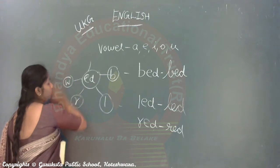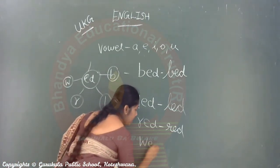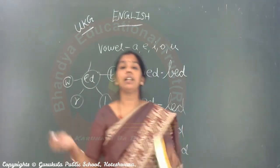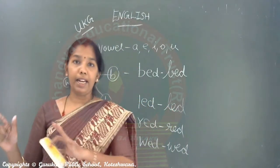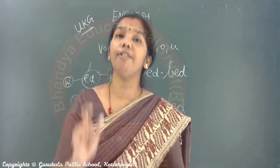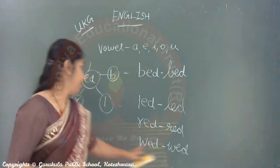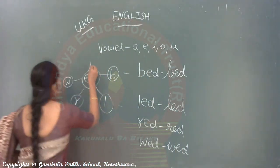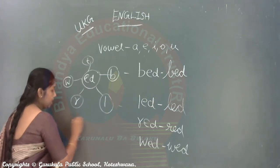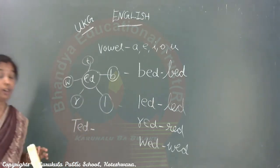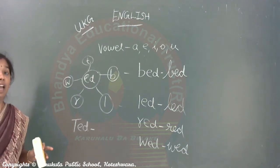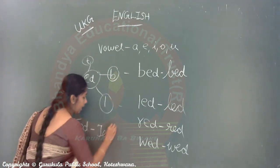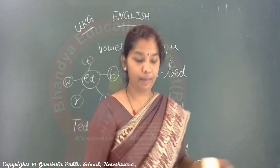If I use W — W-E-D. What will it become? W-E-D, 'wed'. Wed means somebody's wedding function. Wedding, one more word for marriage is wedding. W-E-D, wed. If I use T — T-E-D. That is 'Teddy', your favorite pet. T-E-D, Ted.